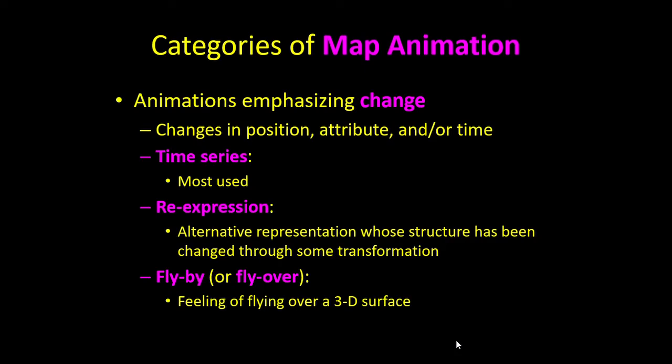Now let's talk about some categories or types of map animation. These are the options you have — and a map can belong to more than one category. For example, you can have a time series map that's also a flyover. A time series map is the most commonly used type. The Formula One changing venues example we just saw is a time series map.